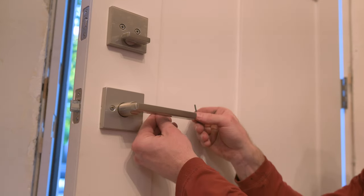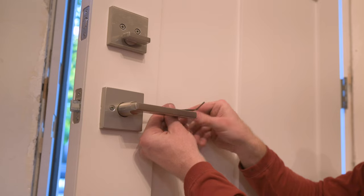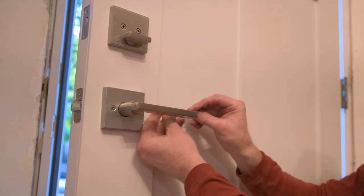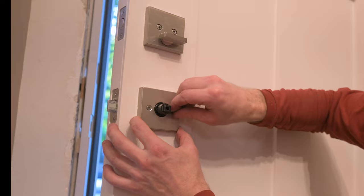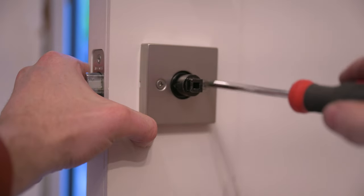It slides on just like that and you can start securing it with one of the screws. To better reach the other screw, using the supplied allen wrench, loosen the grub screw in the handle and remove the handle. Now you can easily tighten both screws while making sure that that face plate is all nice and straight.